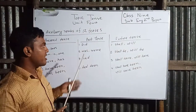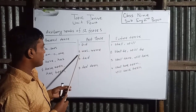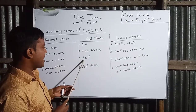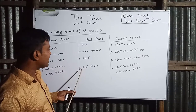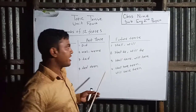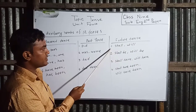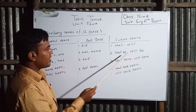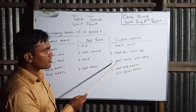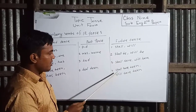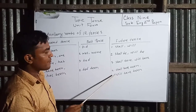Now let's see the helping verbs of past tense and future tense. For past tense: was/were — past continuous; had — past perfect; had been — past perfect continuous. For future tense: shall/will — future indefinite; shall be/will be — future continuous; shall have/will have — future perfect; shall have been/will have been — future perfect continuous.